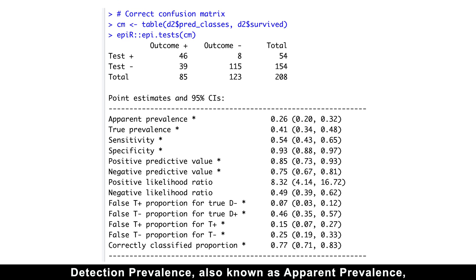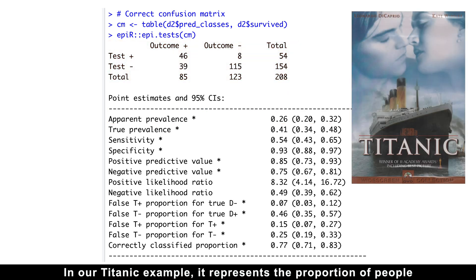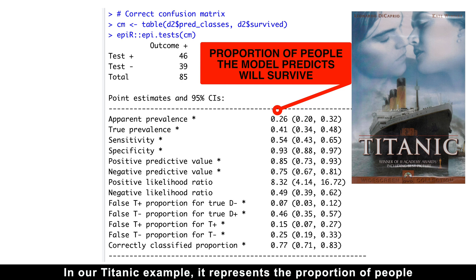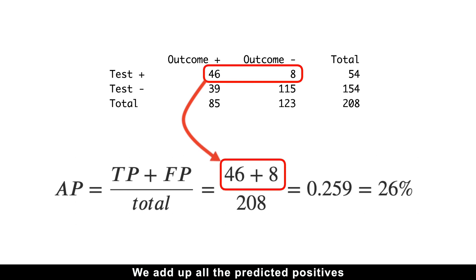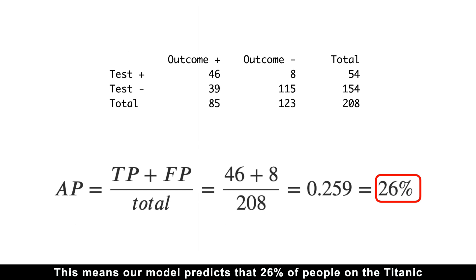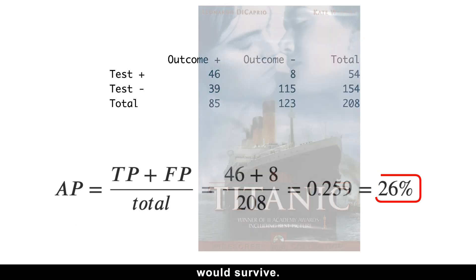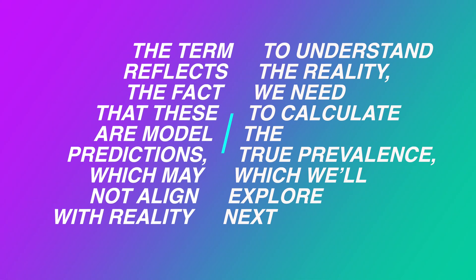Detection prevalence, also known as apparent prevalence, is the percentage of positive cases predicted by the model. In our Titanic example, it represents the proportion of people the model predicts will survive. Here is how we calculate it. We add up all the predicted positives, the values in the top row of the confusion matrix, and divide by the total number of cases. This means our model predicts that 26% of people on the Titanic would survive. But why is this prevalence called apparent? The term reflects the fact that these are model predictions, which may not align with reality. To understand the reality, we need to calculate the true prevalence, which we'll explore next.